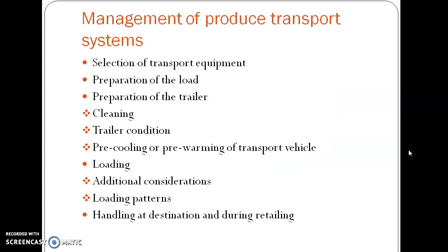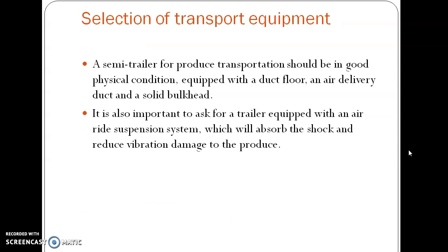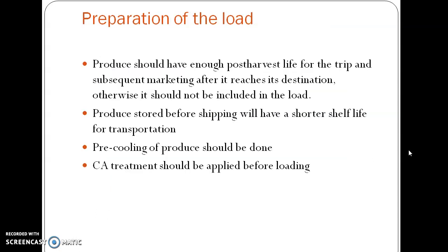Regarding the management of the produce transport system: first, we select the transport equipment and prepare the load, then prepare the trailer, followed by loading and handling at destination. When selecting transport equipment, the trailer should be in good physical condition and equipped with a duct floor and air delivery duct. When preparing the load, the post-harvest life of the produce should be sufficient to handle the trip and arrive in good condition; the produce should be pre-cooled and given controlled atmospheric treatment before loading.